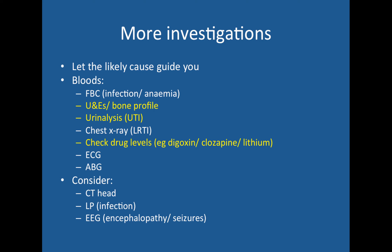For investigations, you need to consider what brought them in and what signs they have. Generally a full set of bloods — FBC to look for signs of infection or anaemia, bone profile to look for electrolyte disturbance — look for UTIs, respiratory tract infections, and check drug levels if relevant. ECGs and ABGs if you're unsure. Consider a CT head as behavioural change can be a sign of intracranial pathology, and maybe an LP for meningitis or encephalitis, and an EEG to check brain function.